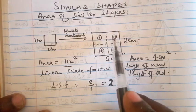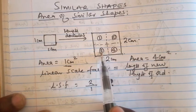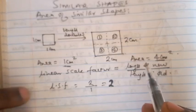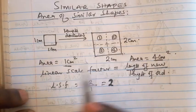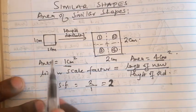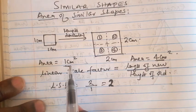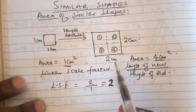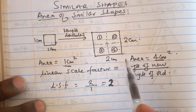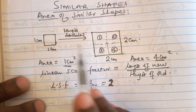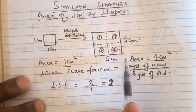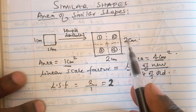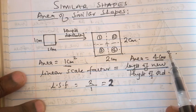So we have one square, the second square, the third square, and the fourth square — four squares in total. The area of the original square is one times one, which is one centimeter squared. After doubling the length and the width, the resulting square is two by two, and the area is four centimeters squared.